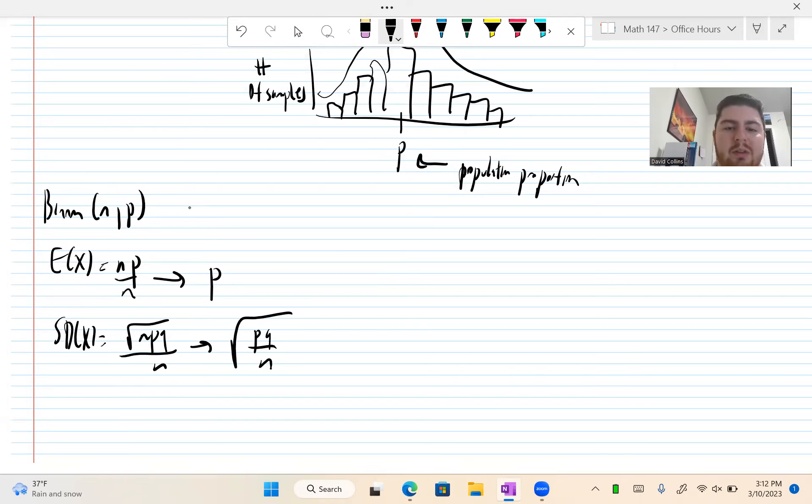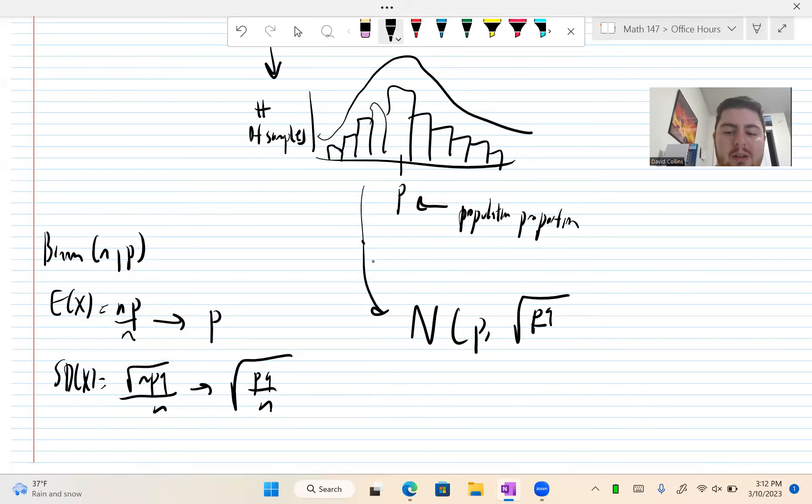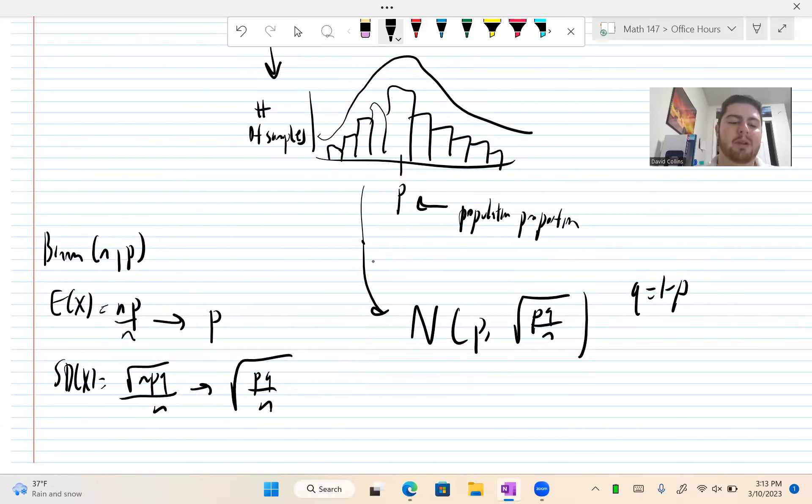Similarly, let's see the standard deviation. It is square root NPQ, but we need to divide by N. So this becomes square root PQ over N, because square root of N divided by N is 1 over square root of N. Where remember Q is 1 minus P, it is the complement of P.